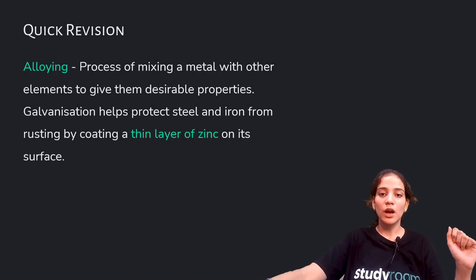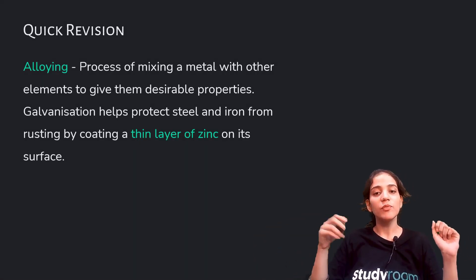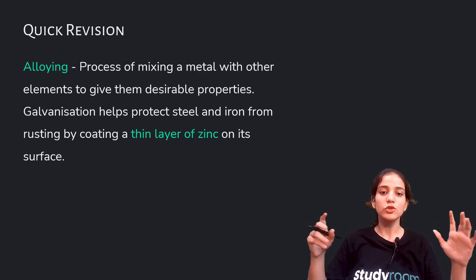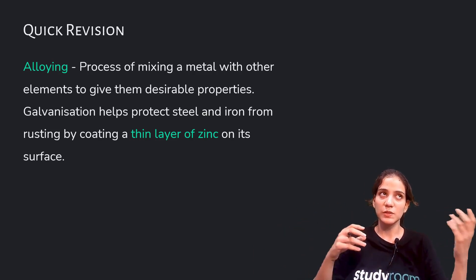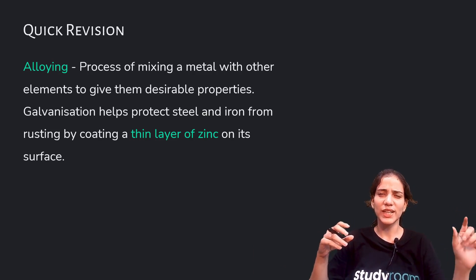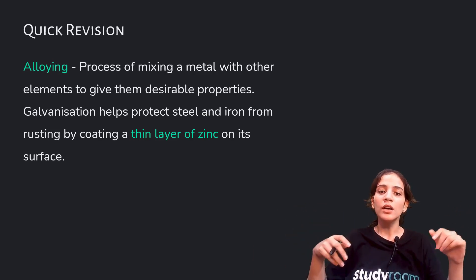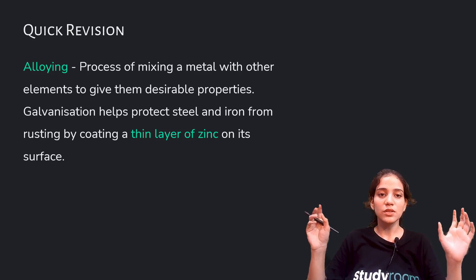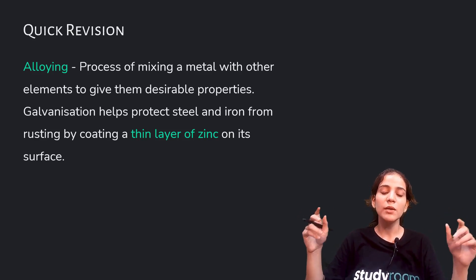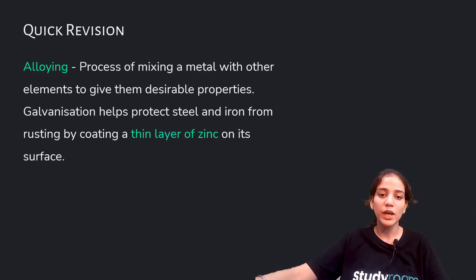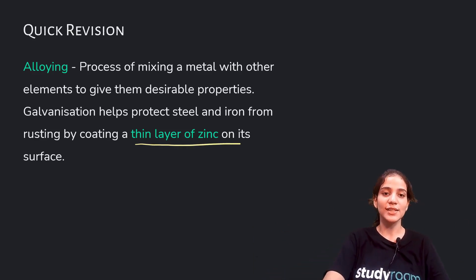Now, alloying is the process of mixing a metal with other elements to give desirable properties such as strength or conductivity. Galvanization helps to protect steel and iron from rusting by coating a thin layer of zinc, because zinc is more reactive on its surface.